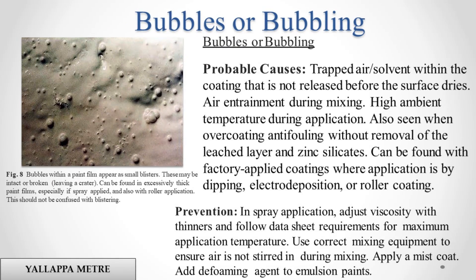Bubbles or Bubbling. Probable causes: trapped air or solvent within the coating that is not released before the surface dries. Air entrainment during mixing. High ambient temperature during application. Also seen when overcoating antifouling without removal of the leached layer and zinc silicates. Can be found with factory applied coatings where application is by dipping, electrodeposition, or roller coating. Prevention: in spray application, adjust viscosity with thinners and follow datasheet requirements for maximum application temperature. Use correct mixing equipment to ensure air is not stirred in during mixing. Apply a mist coat. Add defoaming agent to emulsion paints.